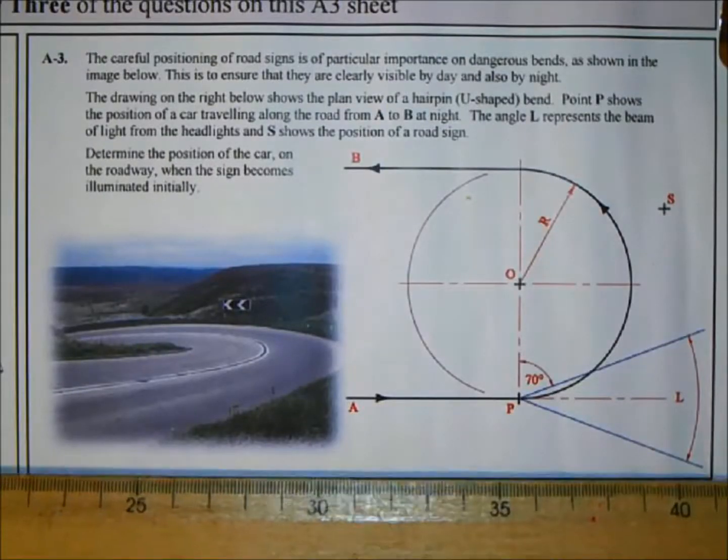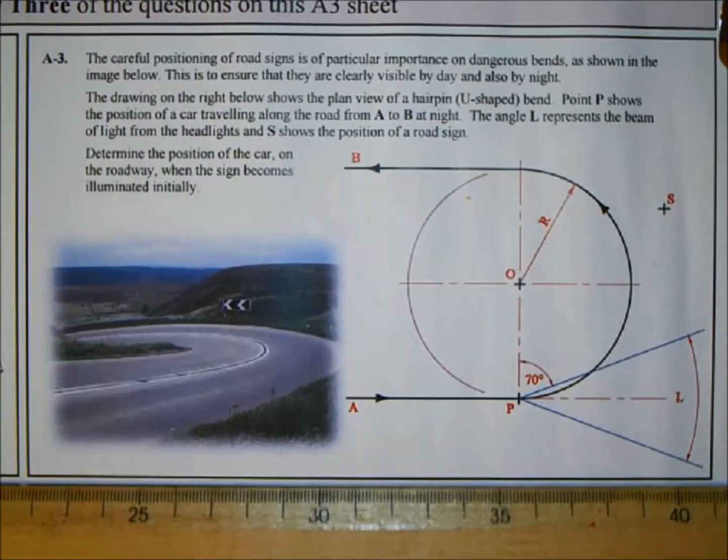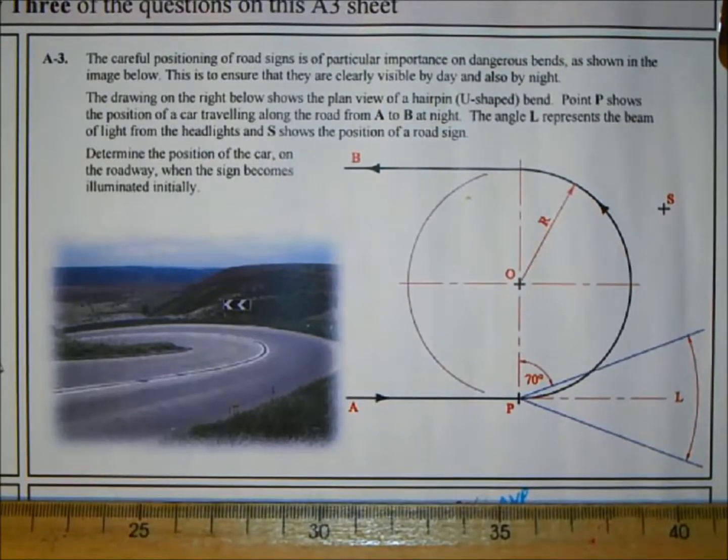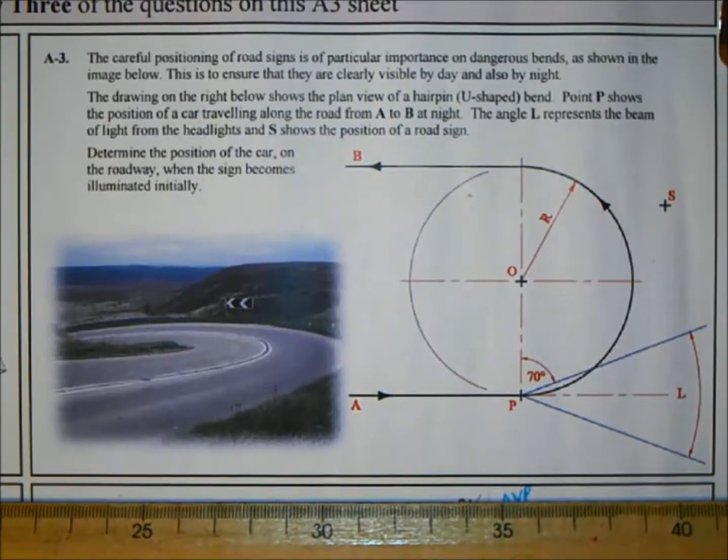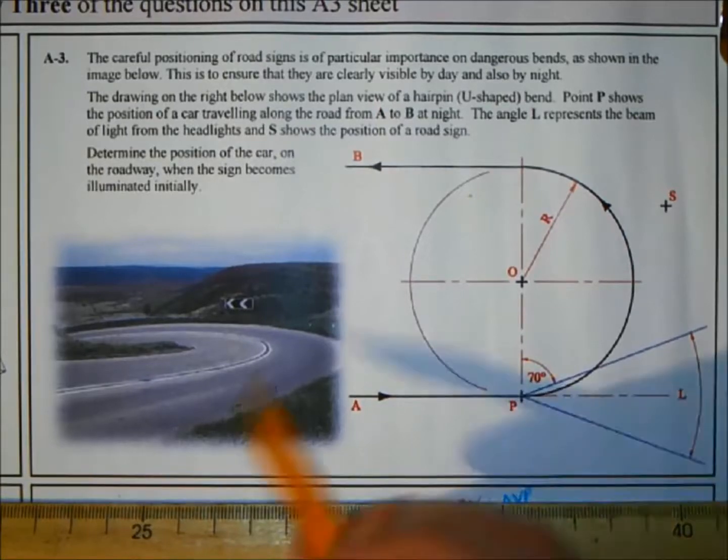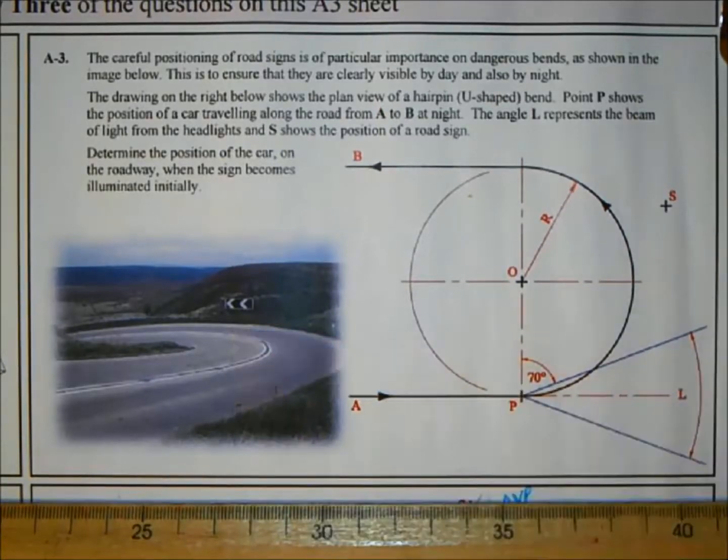Hi and welcome to another DCG tutorial. Today we're on the 2012 paper section A question A3, a short question. The careful positioning of road signs is of particular importance on dangerous bends as shown in the image below.